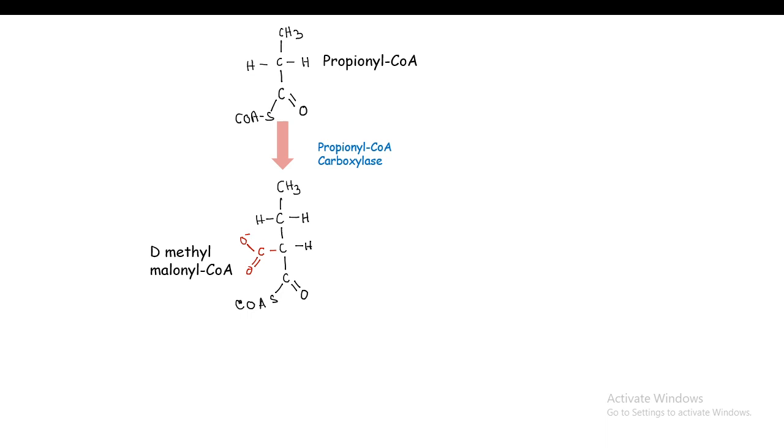It's a step-up reaction, so from a three carbon a four carbon intermediate is formed. Now with an epimerase reaction it would form L-methylmalonyl CoA. It's just an isomer that is formed because L forms are better recognized by the body's enzymes.